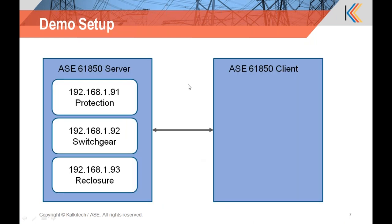For this demo setup, I have set up a laptop with the 61850 server with three alias IPs. The alias IPs are: 1.91 for the protection device, 1.92 for the switchgear function, and 1.93 for the reclosure function. We will try to run the client from a separate laptop and will be switching screens during the demo, though we will keep it minimal to avoid delays — switching screens two or three times. So this is the demo setup; now let us go to the demo.